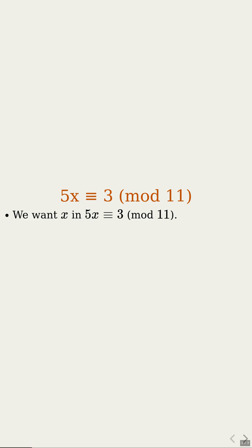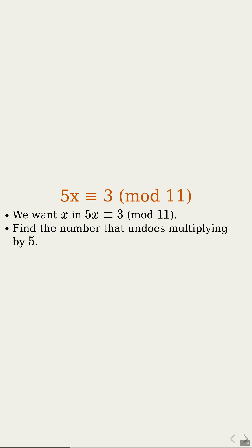We want x in the equation where 5 times x is the same as 3 modulo 11. So we just need a number that behaves like dividing by 5 in this modulus setting. That number is referred to as the inverse of 5 modulo 11. Ask yourself: what number times 5 gives 1, when considering multiples of 11?